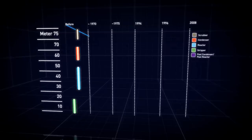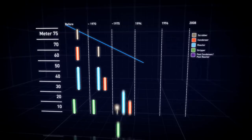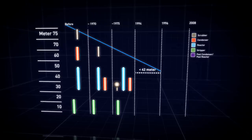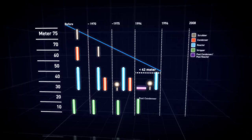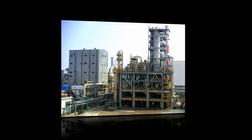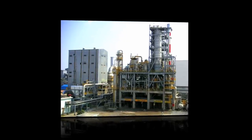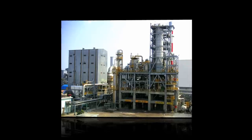In cases where a urea 2000 plus plant features a pool condenser, the total plant height is reduced to a mere 42 meters. In 1994, the first pool condenser was successfully commissioned at the CAFCO plant in Bangladesh.